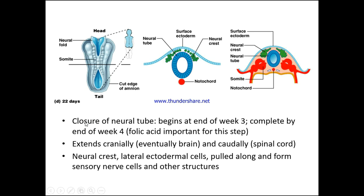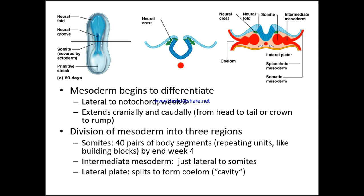Closure of the neural tube begins at the end of week three and is complete by the end of week four. Folic acid is important for this step. It extends cranially — eventually forming the brain — and caudally the spine. The neural crest, lateral ectodermal cells pulled along, form sensory nerve cells and other important structures. At 20 days we have the neural fold, neural groove, somites covered by ectoderm, and the primitive streak all beginning to fuse in.